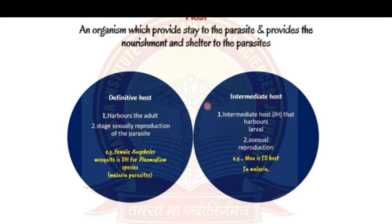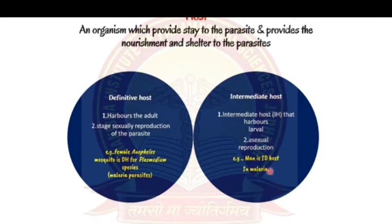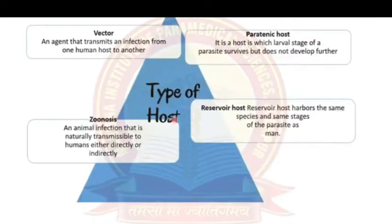The intermediate host is the alternative to the definitive host. In the intermediate host, we see the larval stage and asexual reproduction. The intermediate host is generally not a human, but in a few cases — such as malaria — the human is the intermediate host and the female Anopheles mosquito is the definitive host.